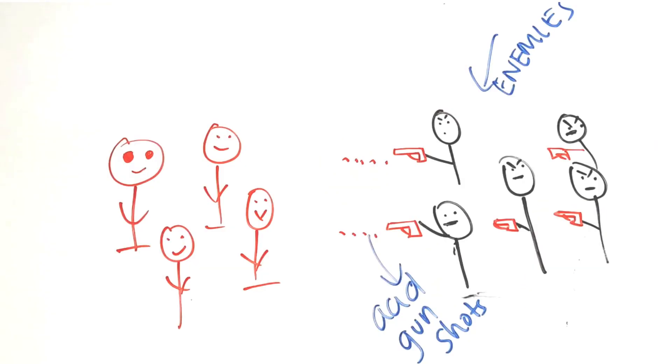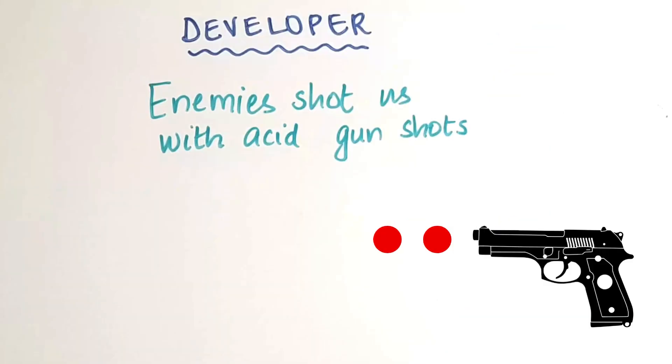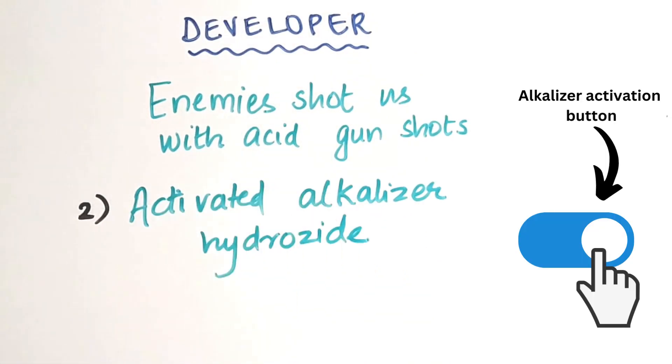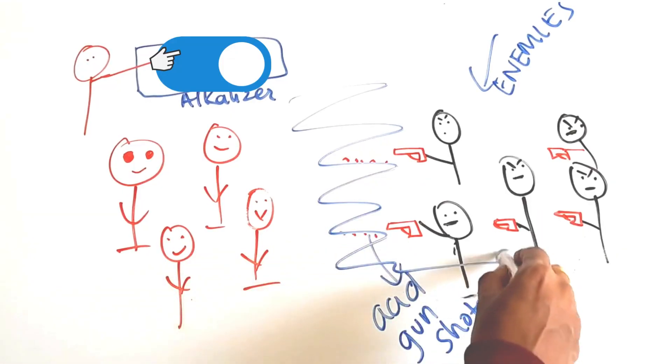Their enemies came to know about this and wanted that secret weapon. They started attacking these people with acid gunshots. Immediately, this smart people's country activated their alkalizer. They just had to press one button and the alkalizer was turned on.